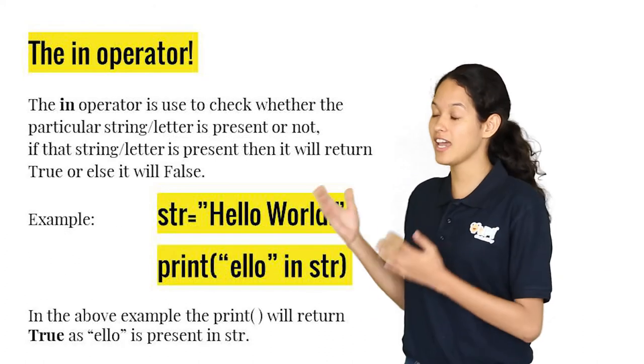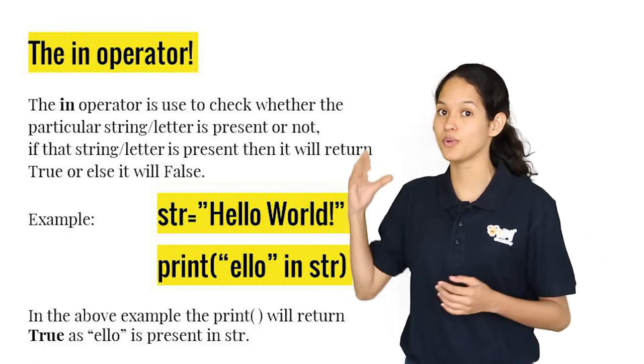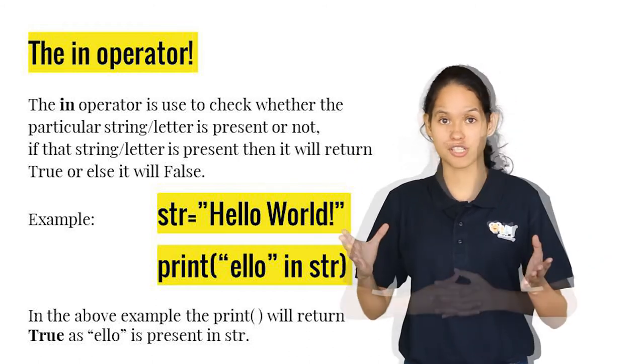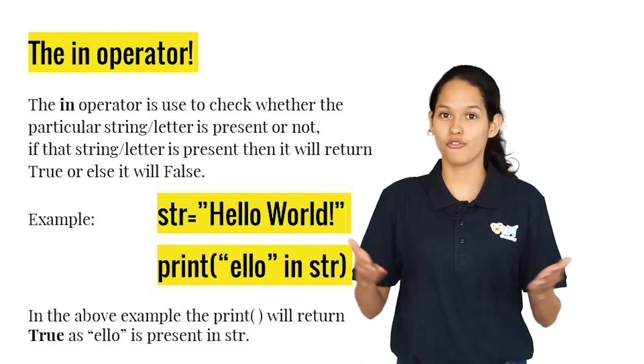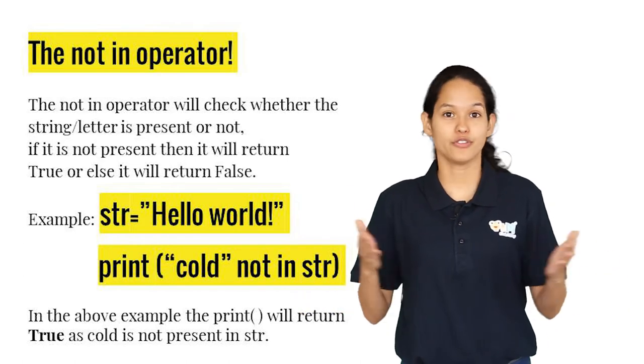The third is the in operator that checks the condition if a character or a word is present within the string, which returns the output true or false. In case of not in operator, it does the opposite of the in operator.